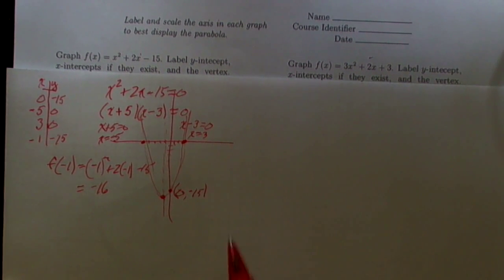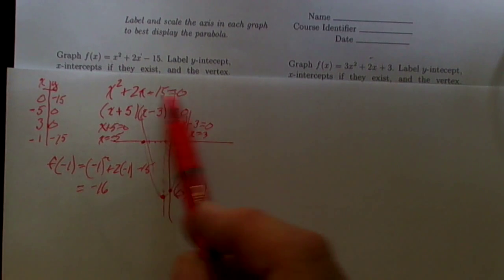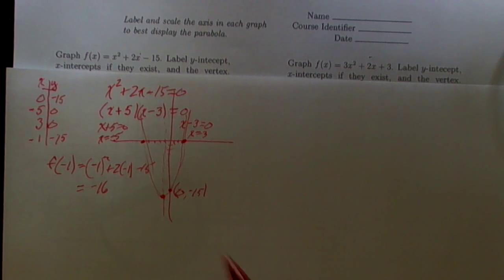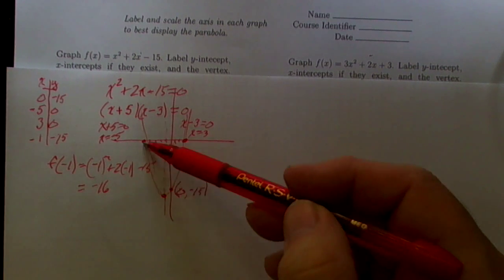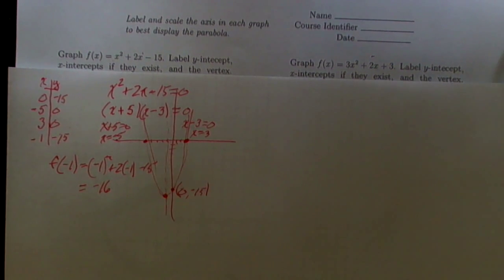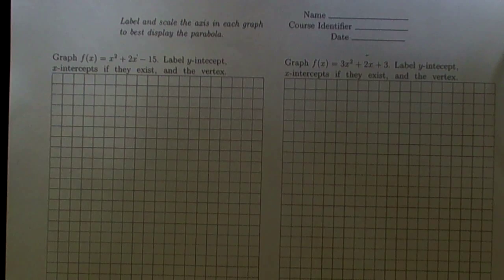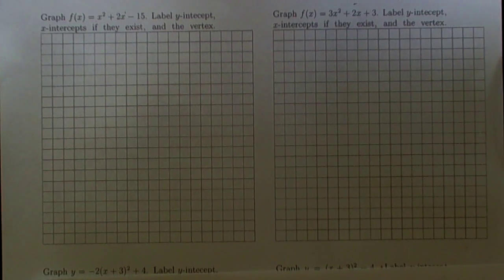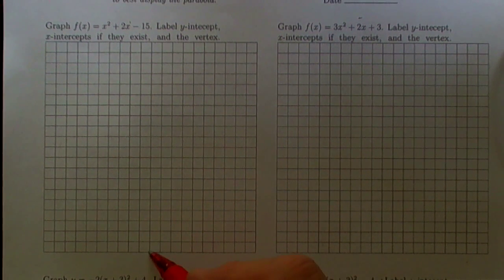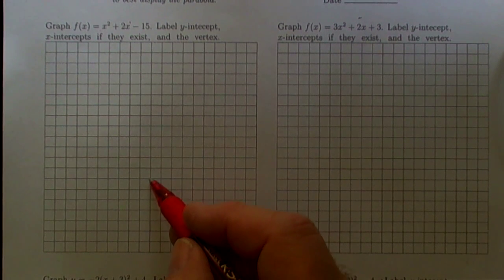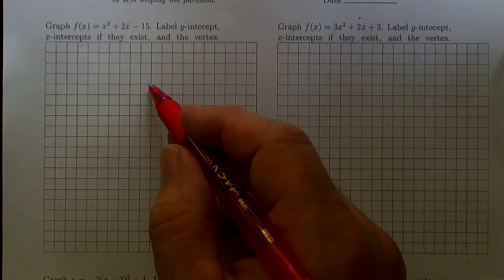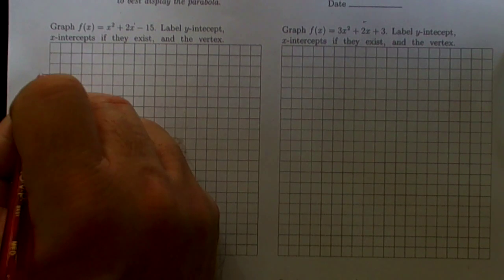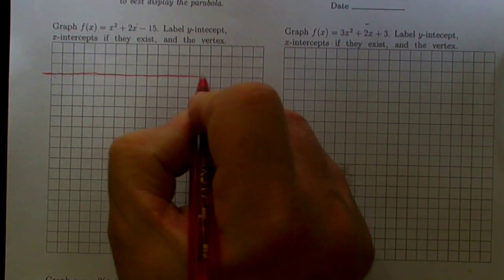Okay, so we need to get all of this to fit on our graph paper. We need to be able to go down to at least -16 from wherever the x-axis is. So let's look at our graph paper here. I'm going to count from the bottom up to 17. I'm going to put my x-axis right here.